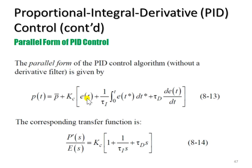plus 1 over tau_i for the integration of error, and then we have tau_d for the differentiation of error. So we have three elements inside this equation where each of these elements is going to multiply with Kc